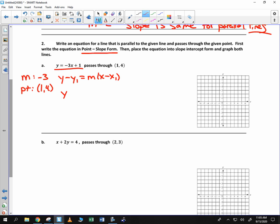So I have y minus 4 is equal to negative 3 times x minus 1. Or y minus 4 is equal to negative 3x plus 3. So I add the 4, y equals negative 3x plus 7.